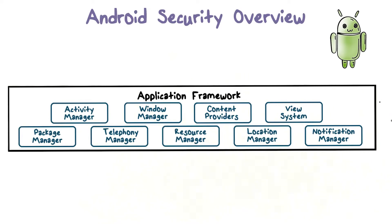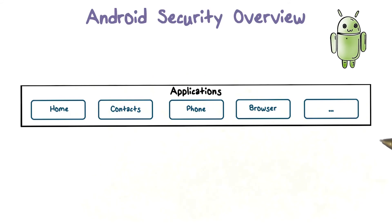The application framework allows apps to be constructed using reusable, interchangeable, and replaceable components. Furthermore, an app can publish its capabilities along with any corresponding data, so that they can be found and reused by other apps. At the top of the Android software stack are the apps. These include apps that come with the device, such as home, contacts, phone, and browser, and other third-party apps that the user has downloaded after purchasing the device.